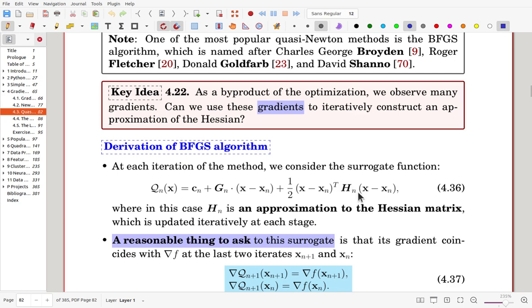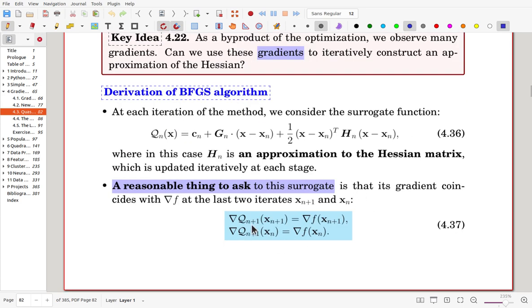And during the derivation, we try to construct Hn. A reasonable thing to ask to this surrogate is that the gradient coincides with the gradient of F at last two iterates xn+1 and xn. That is the requirement.